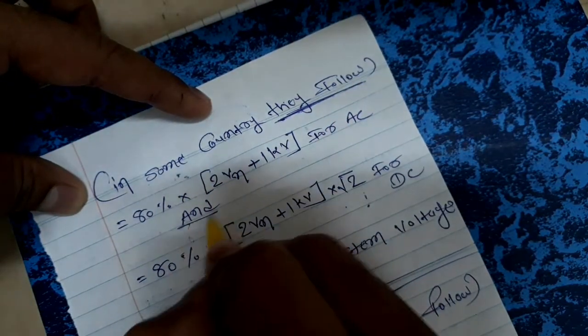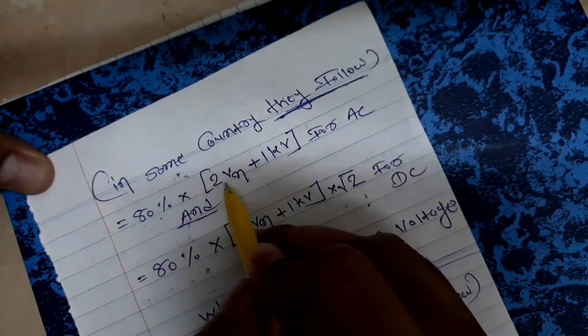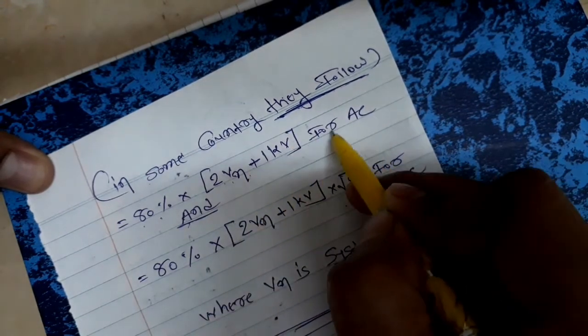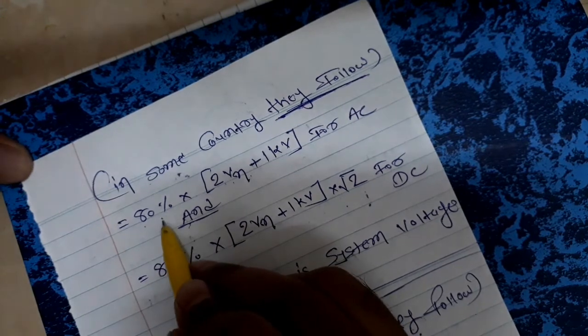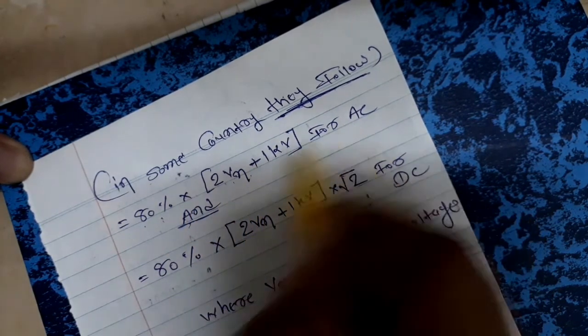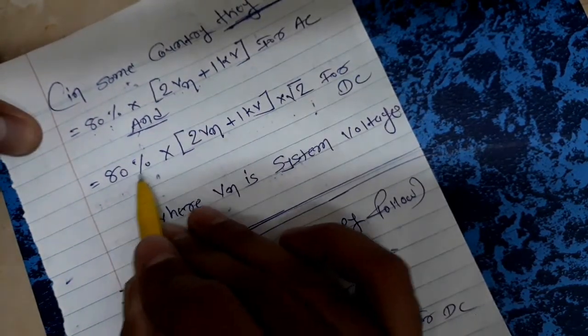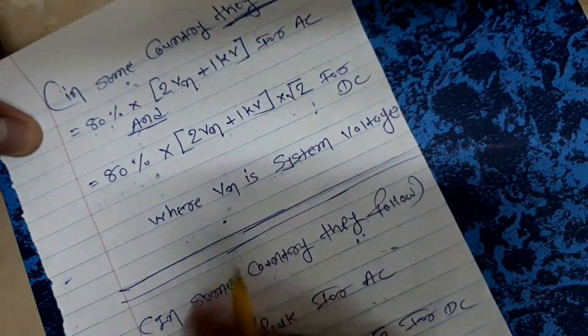For bus, the formula is 80% × (2 × Vn + 1kV) for AC. This is the AC equation. For DC, it's 80% × (2Vn + 1kV) × √2.